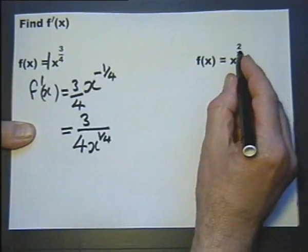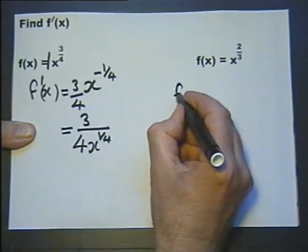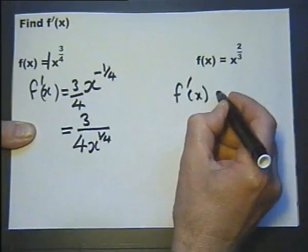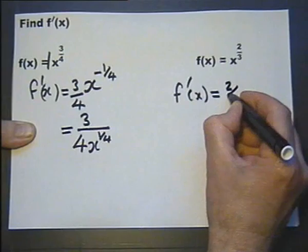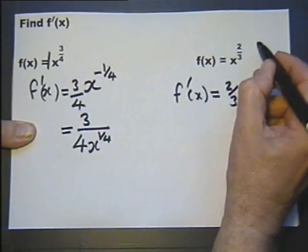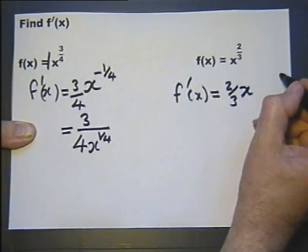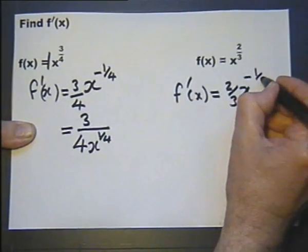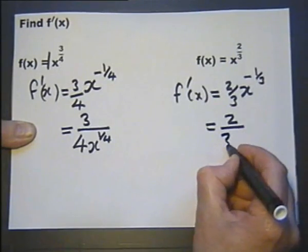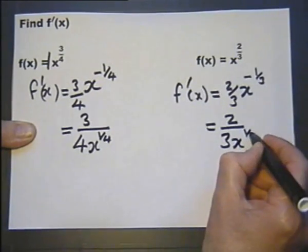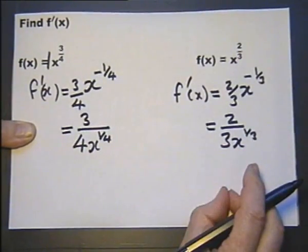Function of x is x raised to the power of 2 thirds. Therefore, the derived function, in other words, f dash of x is 2 thirds times the 1 is 2 thirds. And drop this by 1 power. 2 thirds subtract 1 is minus a third. And the answer could be written like that. No more correct. But it's useful to appreciate.